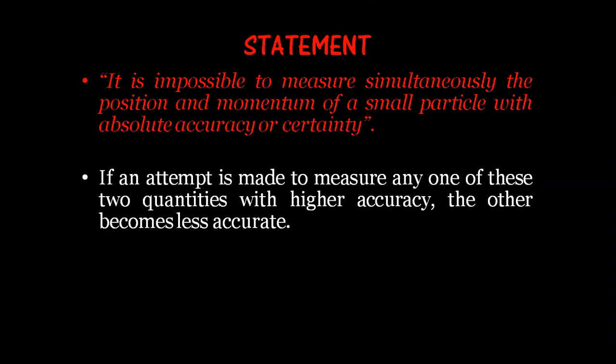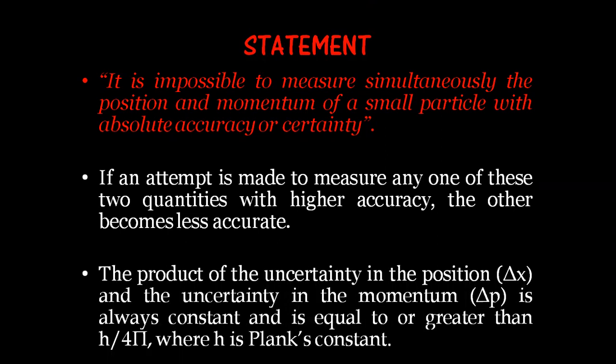That means if I try to find out the position of a subatomic particle with accuracy, then the momentum becomes less accurate, or if I want to find out the momentum, then the position becomes less accurate. The product of the uncertainty in the position — that is how much is the error in the position — and the uncertainty in the momentum, that is delta p, is always constant.